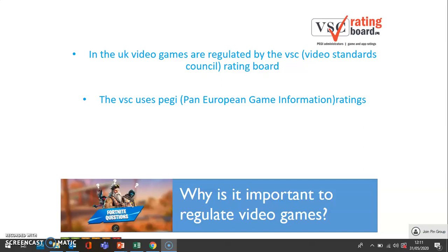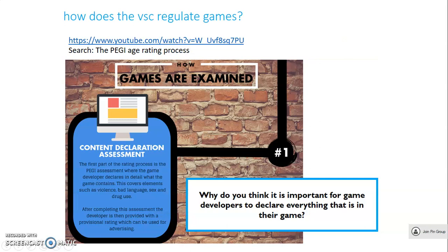We're now going to look at the process that the VSC uses in order to rate a video game. There is a YouTube video you can watch — if you search for 'the PEGI age rating process' it is the first video that comes up. I'm going to talk through the five steps now very briefly. At each step, make some quick notes and answer the question on the screen. Step one is content declaration assessment: this is where the developer themselves look at their own game and fill in a questionnaire about what their game includes that might need rating. They then send that to the VSC, who will give them a provisional rating.